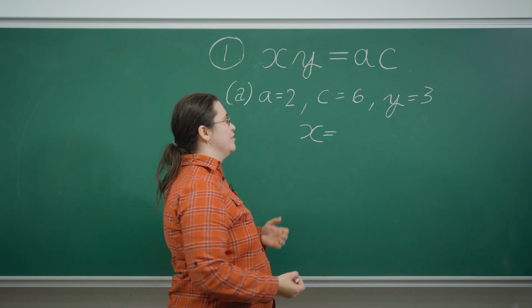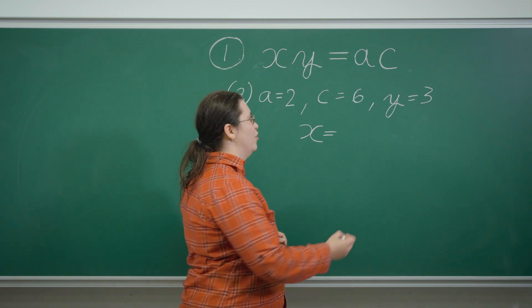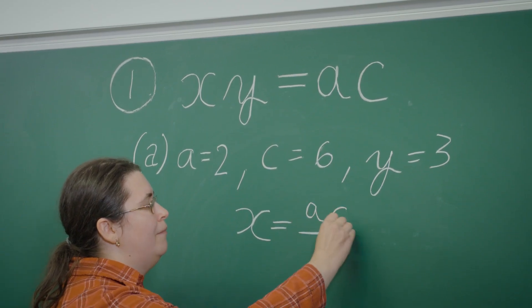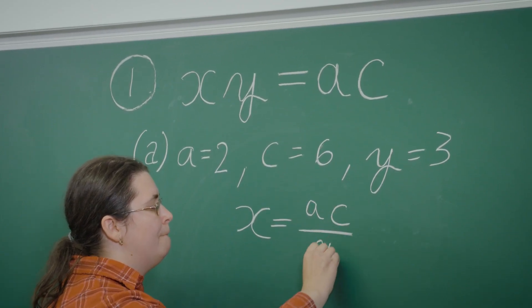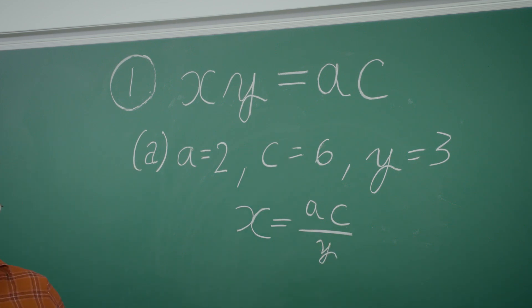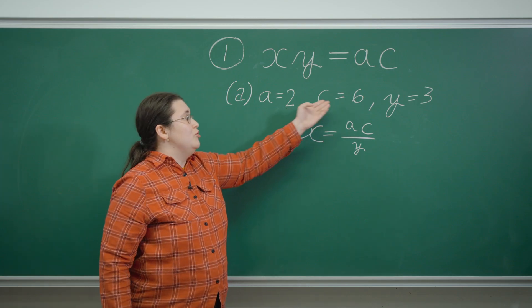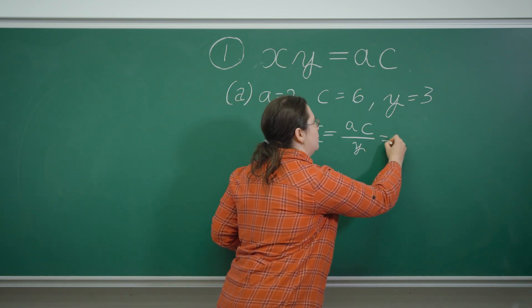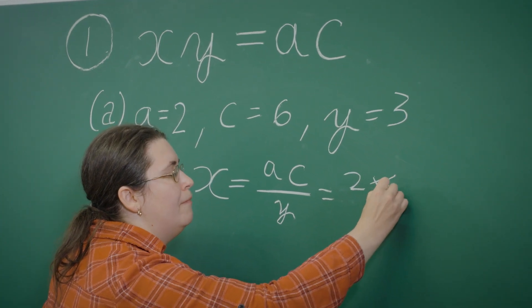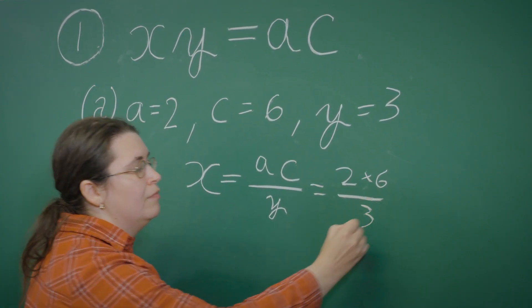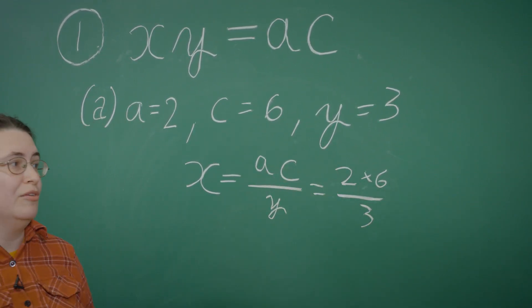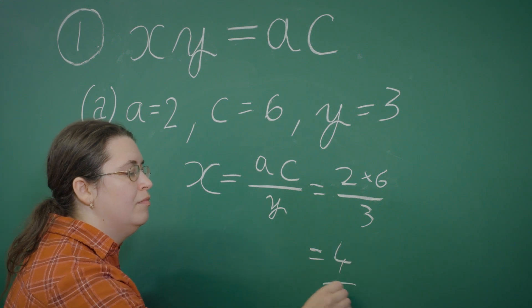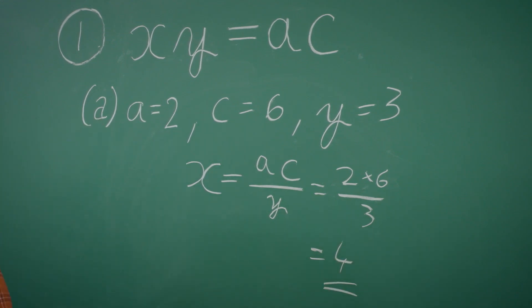Again remember Y has to be positive so we don't need to worry about Y being zero here. Now we simply substitute the values we're provided with. So we have 12 divided by 3 which is 4, which is the answer to the first part of the question.